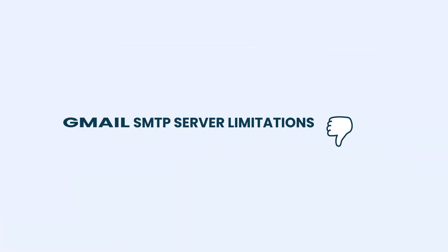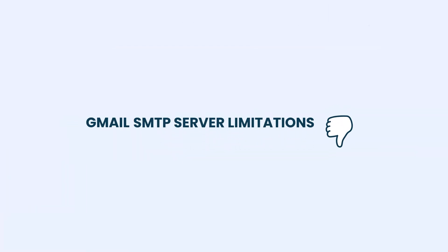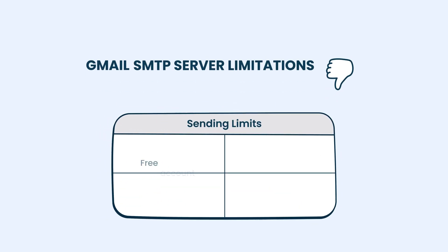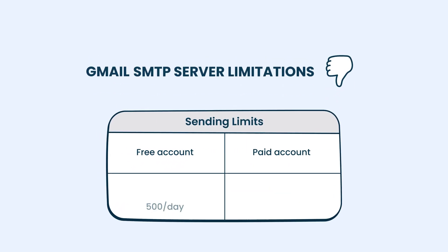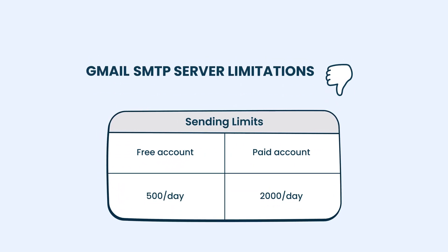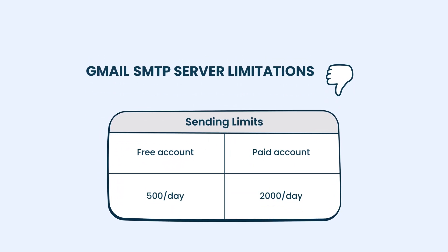Still, like any SMTP server, Gmail also comes with limitations. If you're using a free Gmail account, you're capped at sending 500 emails per day, while Google Workspace accounts get a higher limit of 2,000 emails daily.